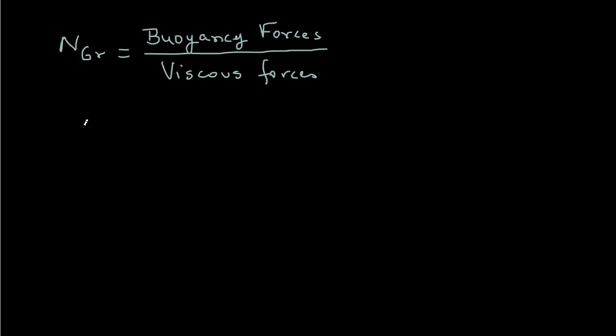For example, if Grashof number is greater than 10 raised to power 9 for fluid flow over vertical plates, then that indicates a turbulent flow.